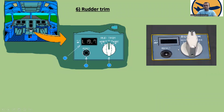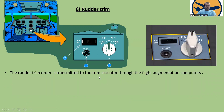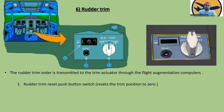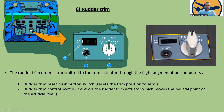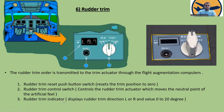Now the rudder trim. The rudder trim order is transmitted to the trim actuator through the flight augmentation computers. The rudder trim reset push button switch resets the trim position to zero. The rudder trim control switch controls the rudder trim actuator, which moves the neutral point of the artificial feel.